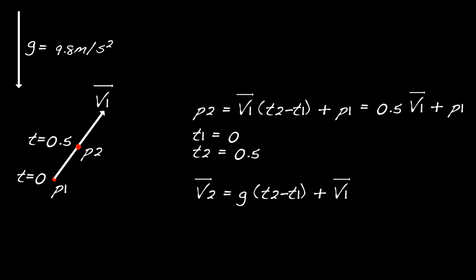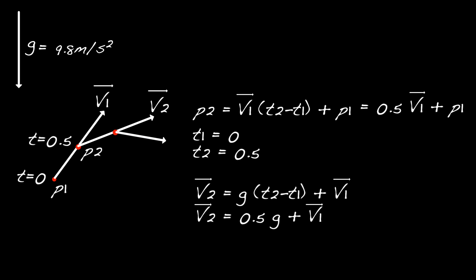Again, t2 minus t1 is 1/2, so v2 = (1/2)g + v1. Now we can compute the position and velocity at t equals 1 using the same formulas. Although this is rather tedious to do by hand, it is relatively easy to write a computer program to do these calculations for us, like this.